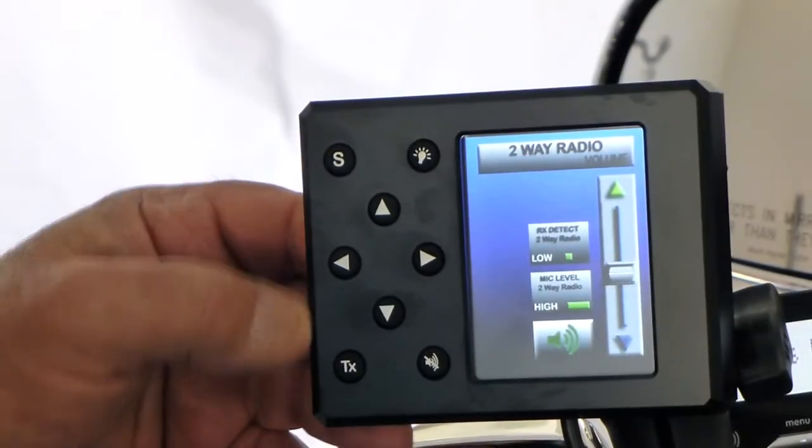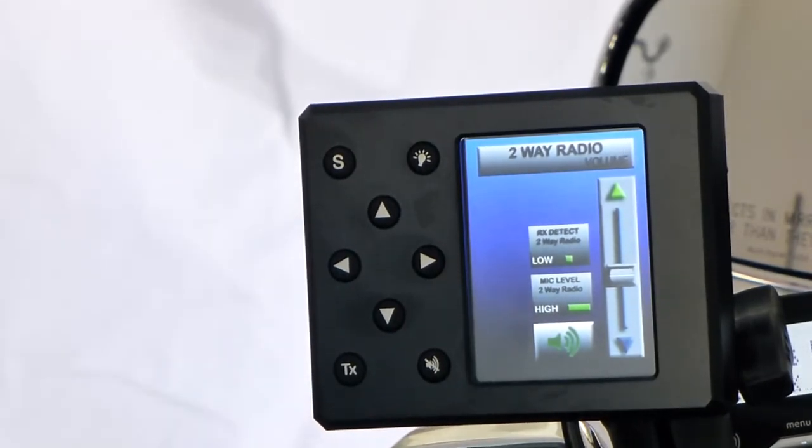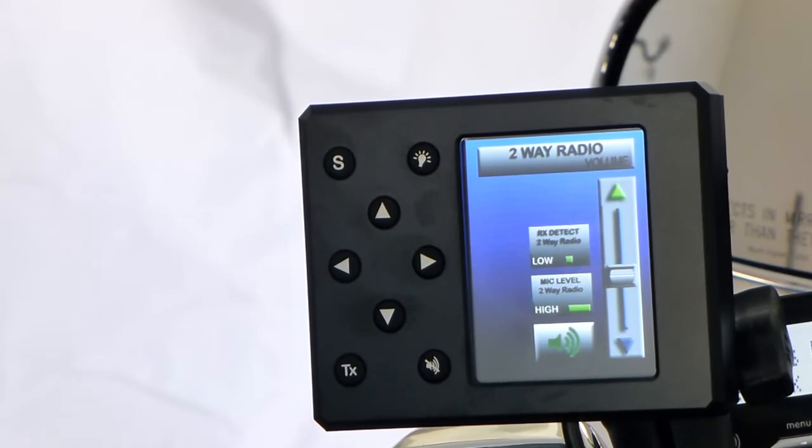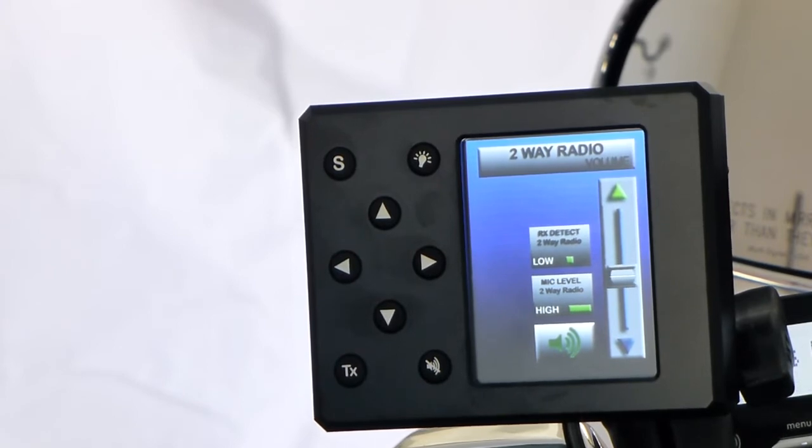So we've set up the Goldwing CB radio. Of course this requires a special adapter available for Mototelo. If we were setting up an FRS radio, the only difference is we would set it to three quarters volume on the radio itself, select the channels, and so on.